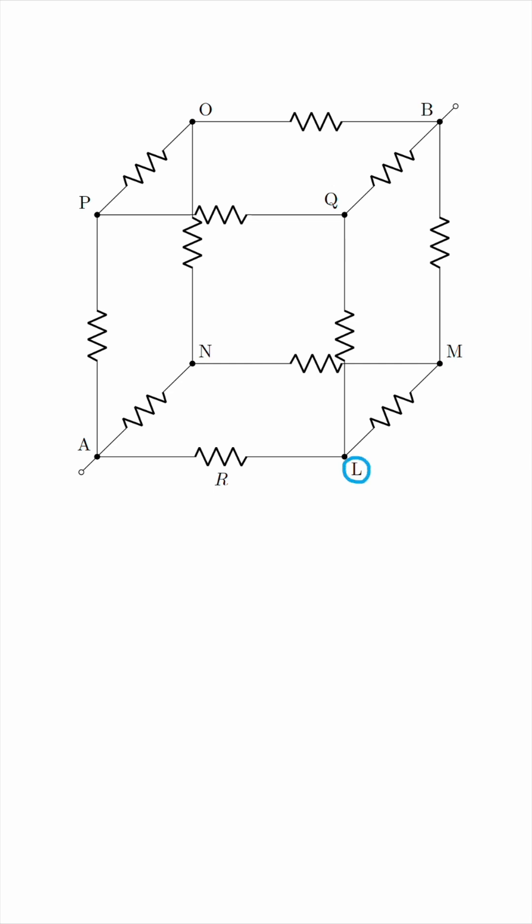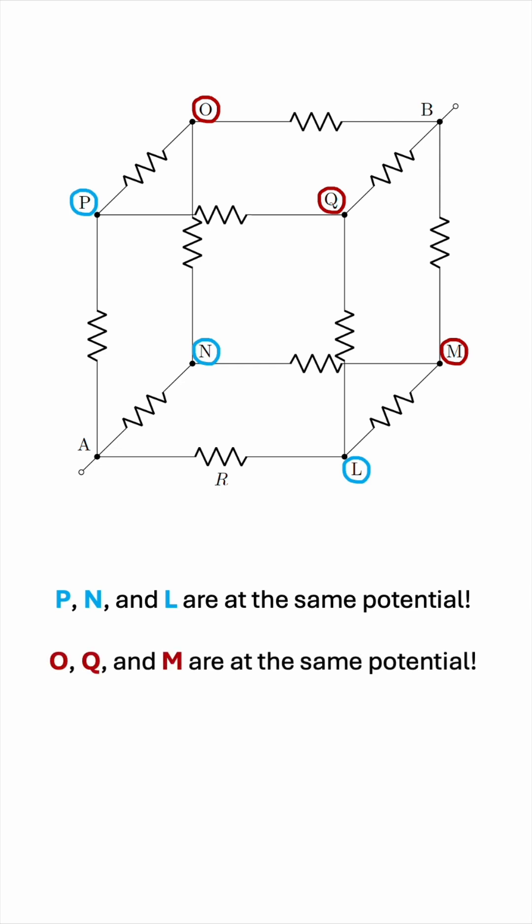For example, node L is electrically equivalent to nodes N and P, and the reason being that they're one resistor away from node A. And since the resistors are equal, the voltage drop across any of these resistances will be the same. And the same can be said about nodes O, Q, and M. They're all one resistor away from node B. So since the resistors are equal, the voltage drops will be the same, and these nodes will be at the same potential.